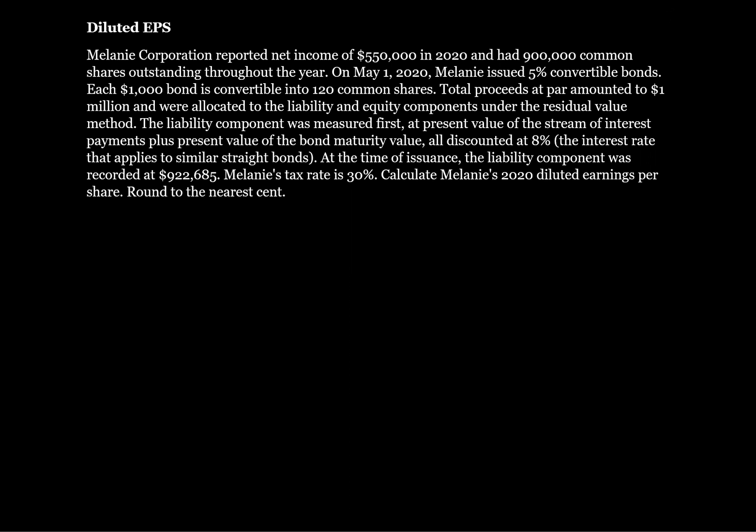Total proceeds at par amounted to $1 million and were allocated to the liability and equity components under the residual value method. The liability component was measured first at present value of the stream of interest payments plus present value of the bond maturity value, all discounted at 8%, the interest rate that applies to similar straight bonds. At the time of issuance, the liability component was recorded at $922,685. Melanie's tax rate is 30%. Calculate Melanie's 2020 diluted earnings per share.